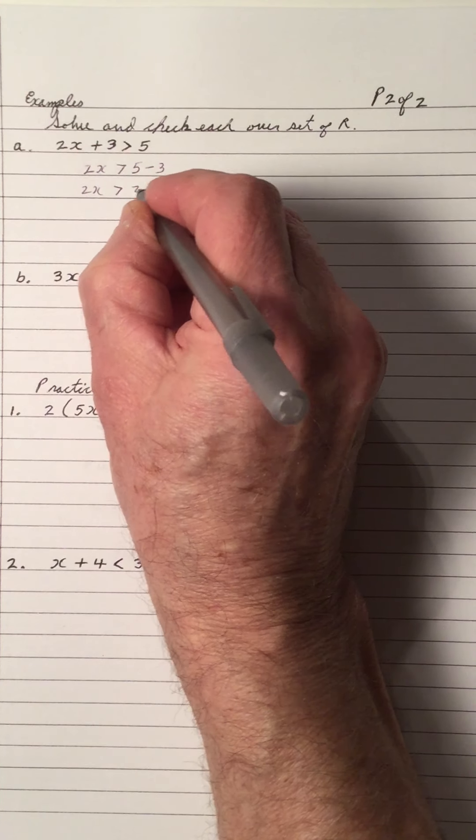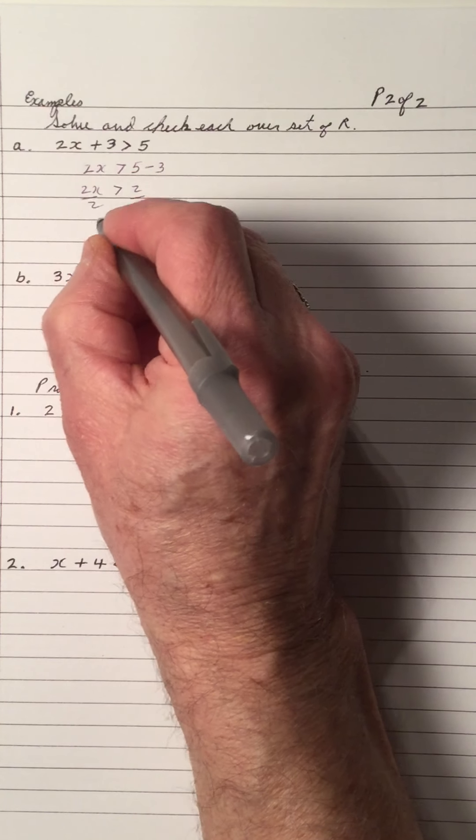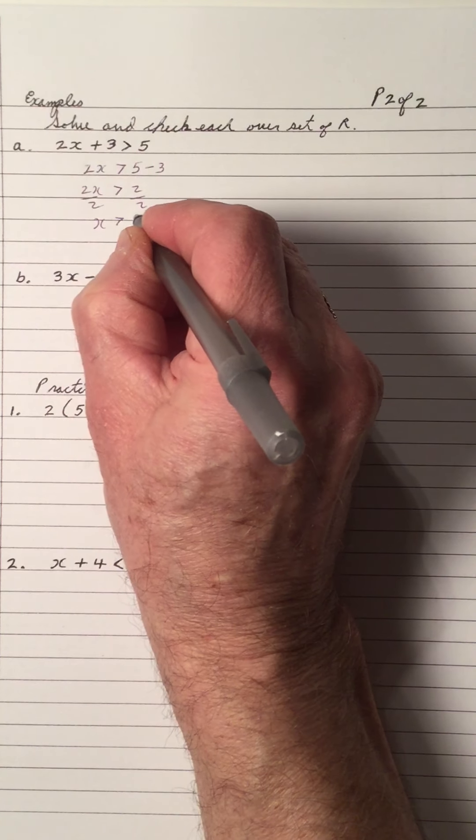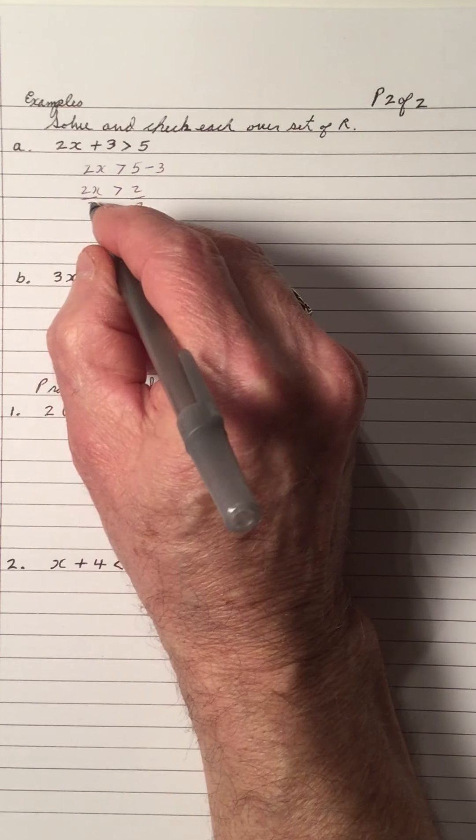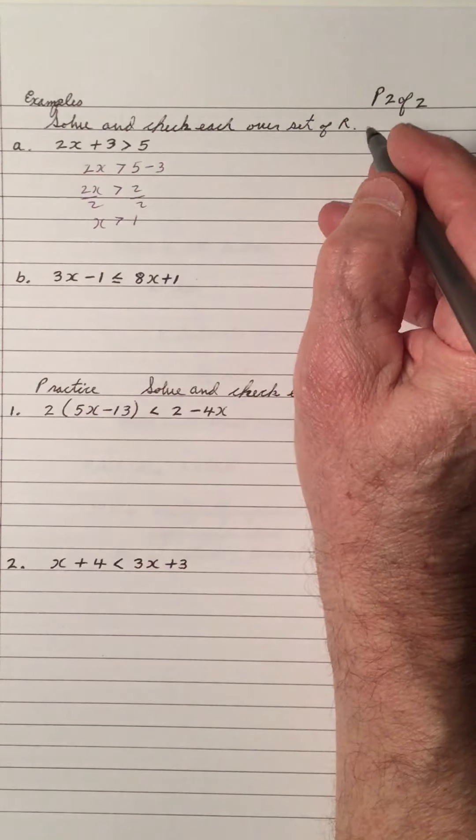We move the 3 to the right side and make it a negative. 2x is greater than 2. Divide by 2 on each side, so x is greater than 1. Notice we divided by a positive number so the inequality stays the same direction.